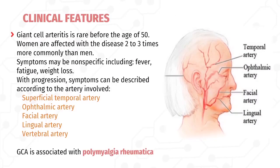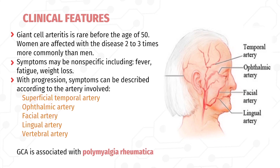GCA is rare before the age of 50, and women are affected two to three times more commonly than men. Non-specific symptoms include fever, fatigue, and weight loss. With progression, symptoms depend on the artery involved: temporal artery involvement causes facial pain or headache; ophthalmic artery involvement occurs in about 50% of patients, ranging from diplopia to complete vision loss; facial artery involvement leads to jaw pain during chewing; and lingual artery involvement causes tongue pain, which is highly specific for GCA.